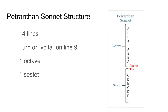With that said, a Petrarchan sonnet is typically 14 lines, where the turn or volta — which is the dramatic shift in the poem — occurs on line 9. It consists of two stanzas, which is a grouping of lines, with one octave, which means 8 lines, and one sestet, which means 6 lines. And those stanzas are broken up by the rhyme scheme, which I'm going to explain next.